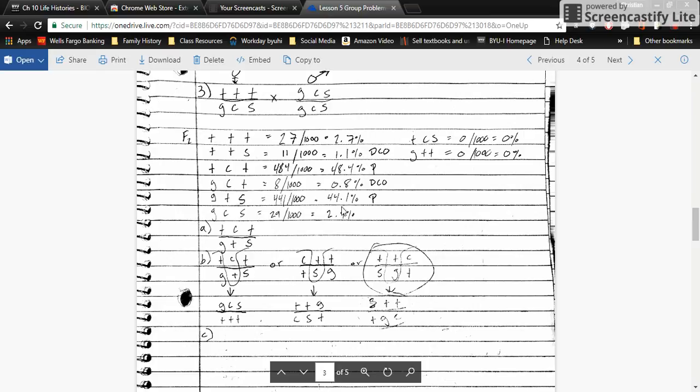For part A, to find out the allele order, we look at the parental phenotypes with the largest percentage, which will be wild C wild and G wild S at 48.4% and 44.1%. What you do is combine these two, so I had wild C wild on top and then G wild S on the bottom. That's the genotype and the allele order.